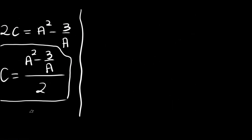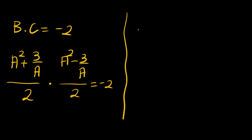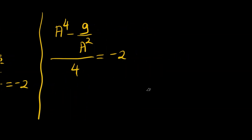Substituting, B times C equals A squared plus 3 over A, divided by 2, times A squared minus 3 over A, divided by 2, equals negative 2. On the numerator we have a difference of two squares: A to the fourth minus 9 over A squared, all divided by 4, equals negative 2. Multiplying both sides by 4A squared gives A to the sixth power minus 9 equals negative 8A squared.